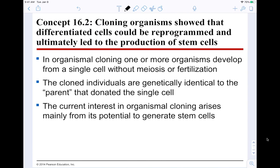Cloning organisms showed that differentiated cells could be reprogrammed and ultimately led to the production of stem cells. In organismal cloning, one or more organisms develop from a single cell without meiosis or fertilization. The cloned individuals are genetically identical to the parent that donated the cell — but it would still grow from an embryo to infant, so if you're 17 and cloned yourself, the clone would be 17 years behind you.